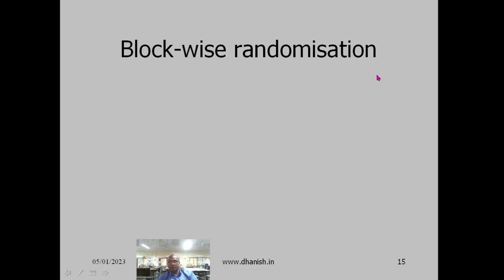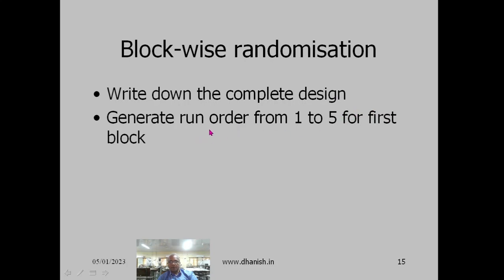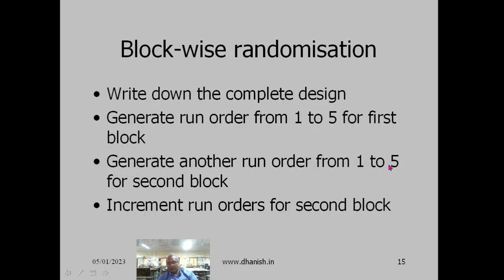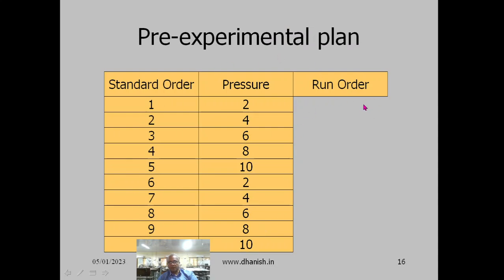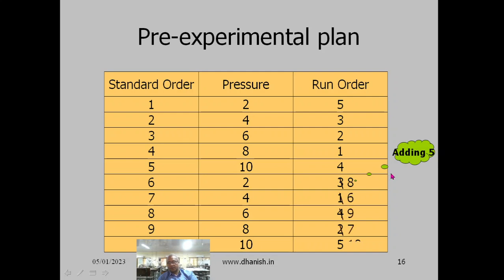Now we consider block-wise randomization, where each block is randomized separately. First write down the complete design, then generate run order from 1 to 5 for the first block, and another run order from 1 to 5 for the second block. Since the second block run orders are from 1 to 5, add 5 to each to get 6 to 10. Finally sort to get the observation table.